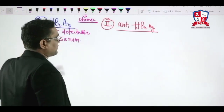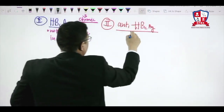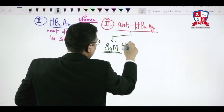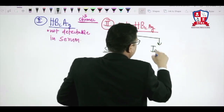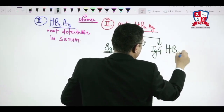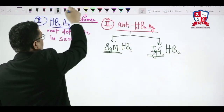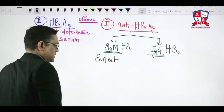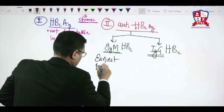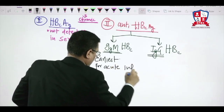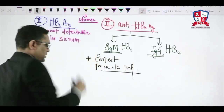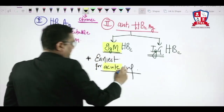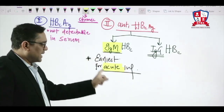There are two types of antibodies against HBcAg: IgM and IgG. IgM type of anti-HBc is the earliest marker of acute infection — this is a very important and frequently asked question. When the examiner says 'earliest marker of acute hepatitis B infection,' the answer will be IgM anti-HBc.